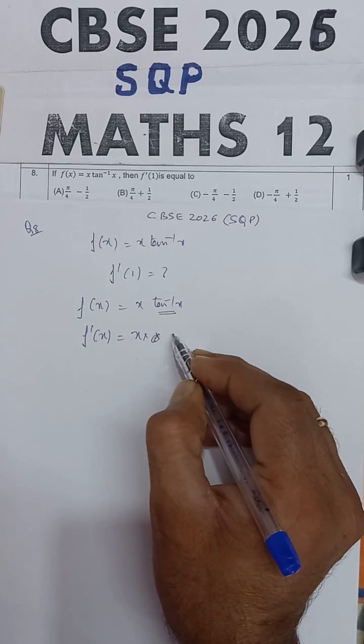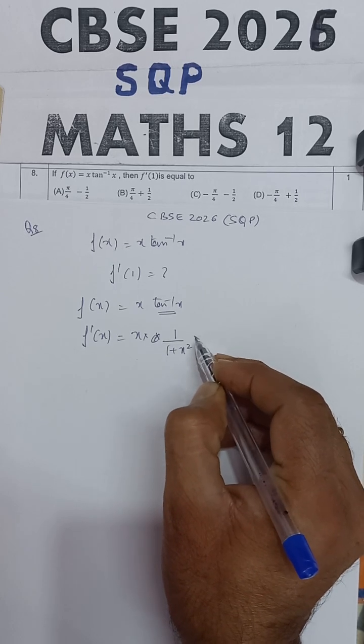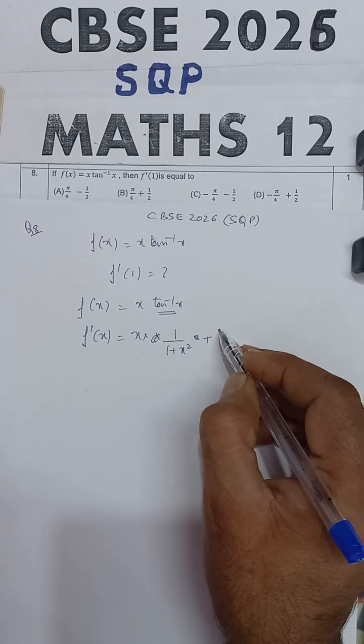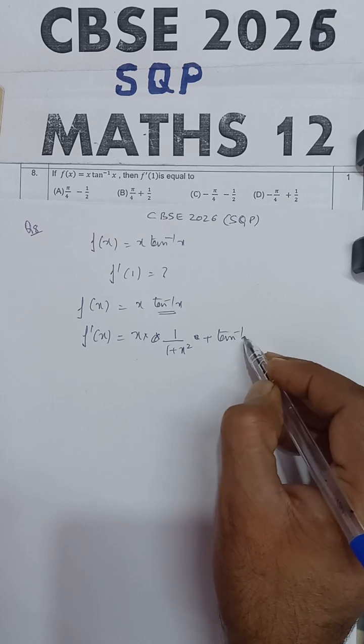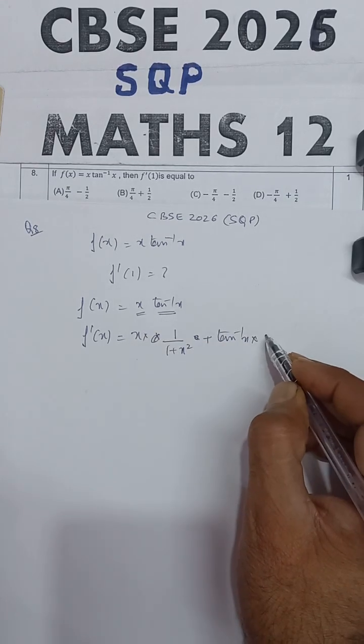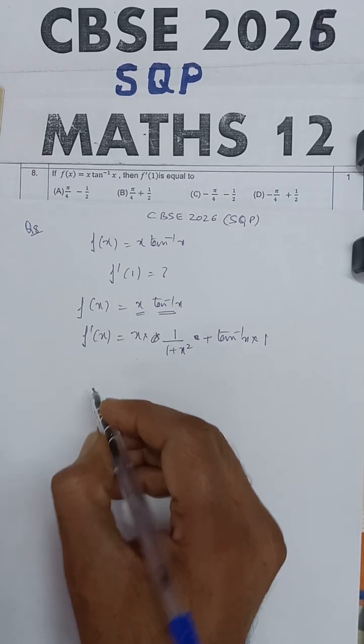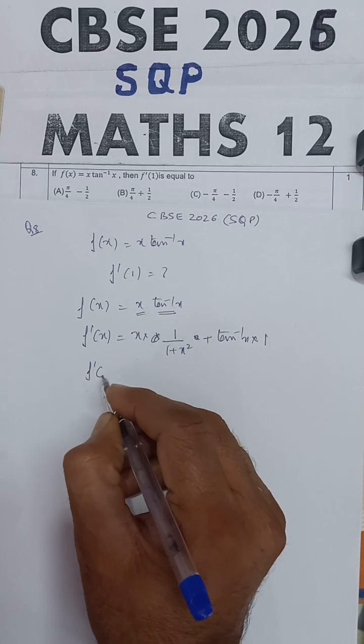Differentiation of tan inverse x will be 1 upon 1 plus x square, plus second into the differentiation of first. Differentiation of x will be 1. So this will be the answer for the derivative. Now you have to find out the value of the derivative at x equal to 1.